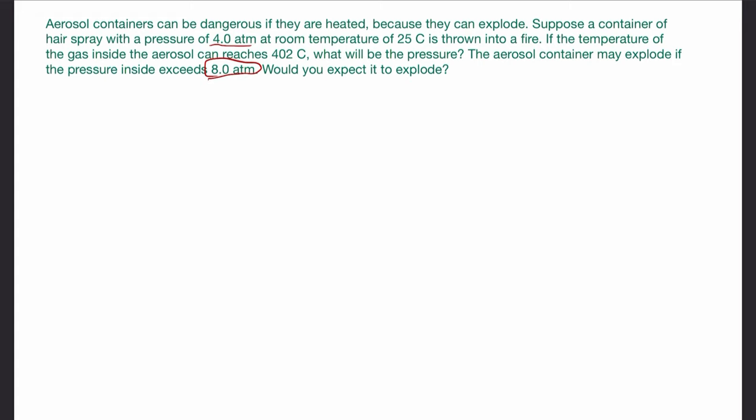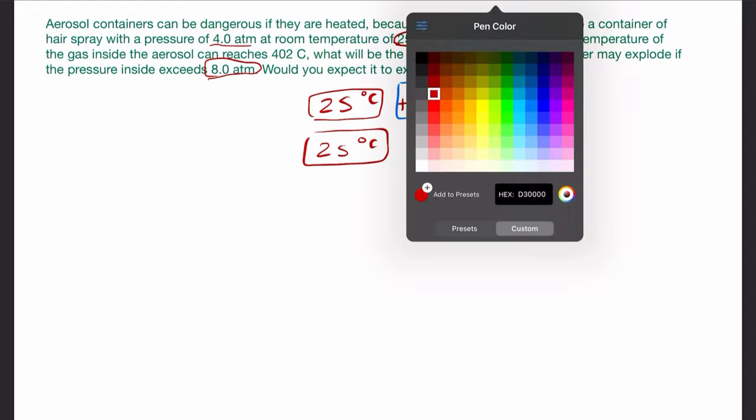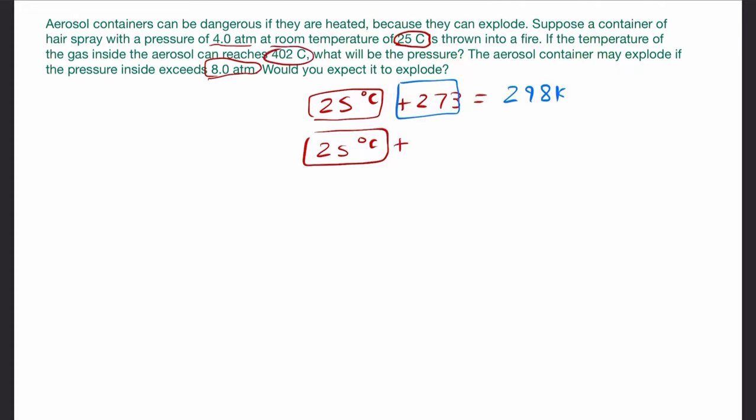Aerosol containers can be dangerous if they are heated because they can explode. Suppose a container of hairspray with a pressure of 4 atmospheric units at room temperature of 25 Celsius is thrown into a fire. If the temperature of the gas inside the aerosol can reaches 402 Celsius, what will be the pressure? The aerosol container may explode if the pressure inside exceeds 8.0 ATM. Would you expect it to explode? Well, would it explode? We don't know because we have to find out the pressure if it would be greater than this 8 atmospheric unit. We're going to use our P1 over T1 equals P2 over T2. Let's look at our conditions. First and foremost, we're going to have to convert these temperatures to Kelvin.